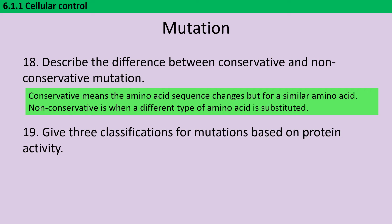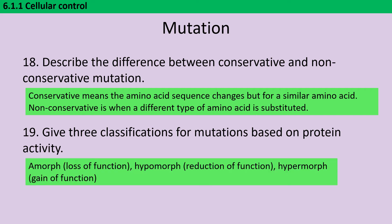If we classify mutations based on protein activity, they can be amorph, which means we've lost the function; hypomorph, which means the function has been reduced; or hypermorph, which means we have a gain of function mutation.